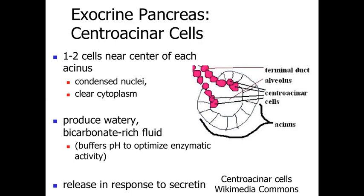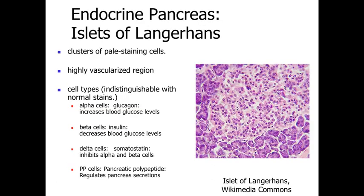Those are the components of the exocrine portion of the pancreas. We'll also talk briefly about the islets of Langerhans — these clusters of pale-staining hormone-secreting cells within the pancreas. They're endocrine, so instead of a duct system, they're very highly vascularized because they're releasing hormones that get into the bloodstream and circulate through the body. It's very difficult to discriminate between the specific cell types within the islets of Langerhans on standard staining; we simply recognize them as hormone-secreting cells.